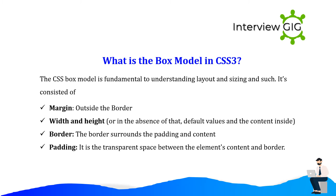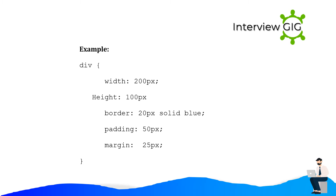What is the box model in CSS3? The CSS box model is fundamental to understanding layout and sizing. It consists of: margin (outside the border), width and height (default values for the content inside), border (surrounds the padding and content), and padding (the transparent space between the element's content and border). Example: div { width: 200px; height: 100px; border: 20px solid blue; padding: 50px; margin: 25px; }.